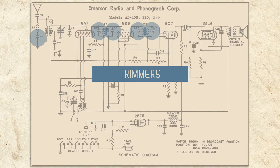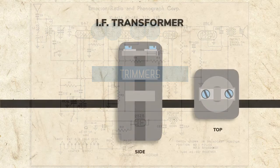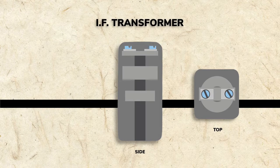There are five other trimmers in our radio, the one on the wave trap and two each in the IF transformers. We'll discuss IF transformers more in an upcoming section.